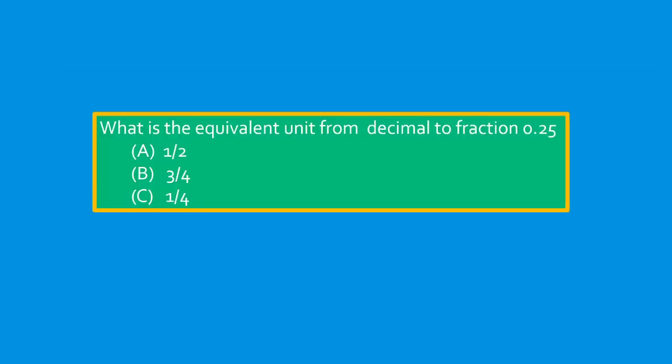Question. What is the equivalent unit from decimal to fraction of 0.25? A, 1/2. B, 3/4. C, 1/4. Answer is 1/4.